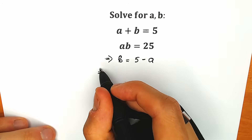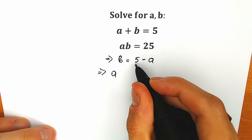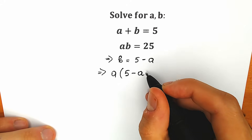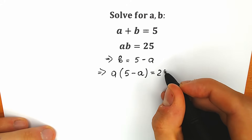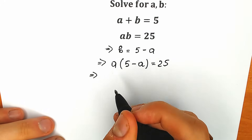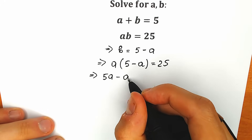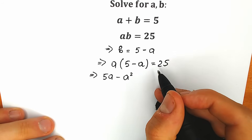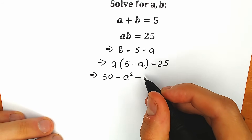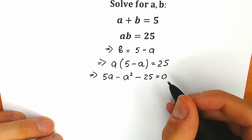Let's do it right now. As a result, instead of a we write a, and instead of b we're going to write 5 minus a. So we have a times (5 minus a) equal to 25. Let's simplify this real quick. On the left side we have 5a minus a squared, and I'm going to write 25 on the left side because this is a quadratic equation. So minus 25 equals zero.